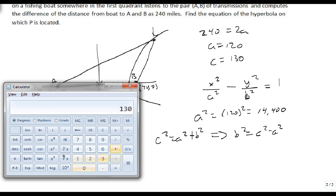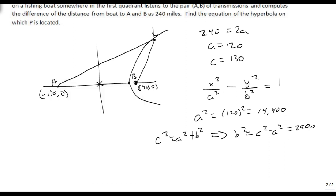So we're going to get out our calculator. We're going to do 130 squared minus 120 squared, and that gives us 2,500. So b² is 2,500, which means b is 50.